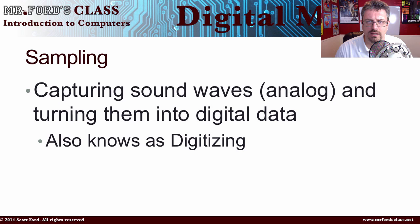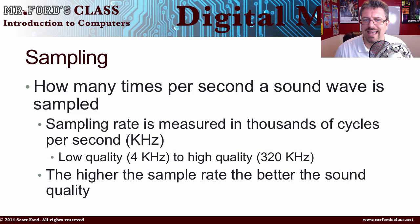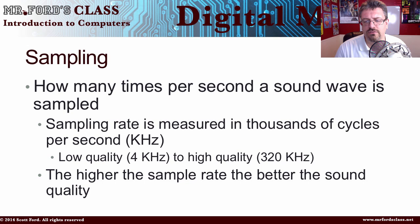Sampling is the actual act of capturing the analog sound waves and then turning them into digital data — this is the actual digitization. How many times per second a sound wave is sampled, meaning how quickly we capture that information, is known as the sampling rate. We measure it in thousands of cycles per second, kilohertz.